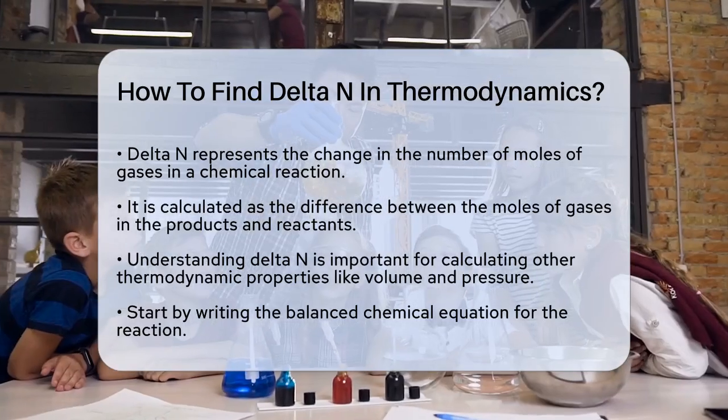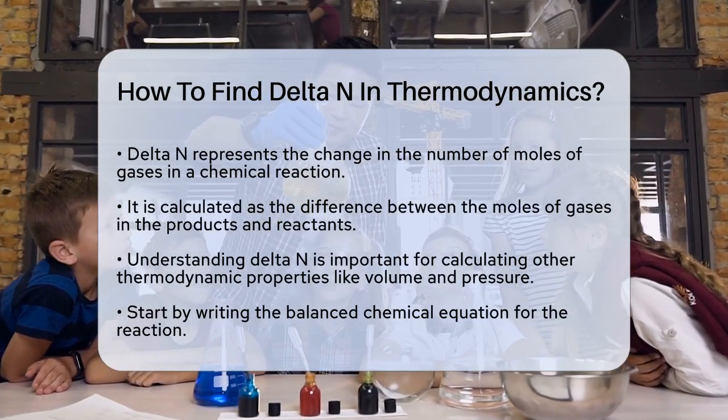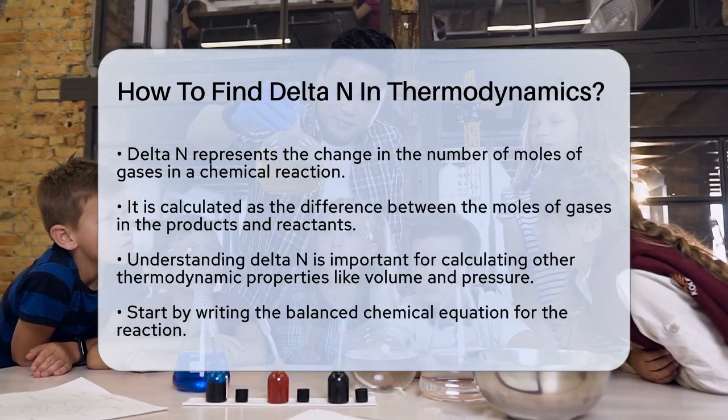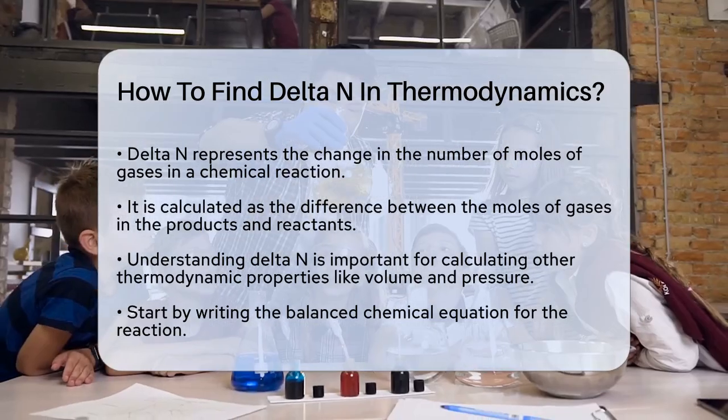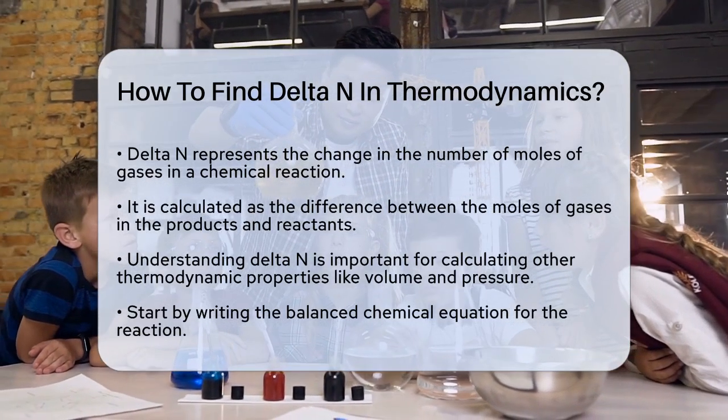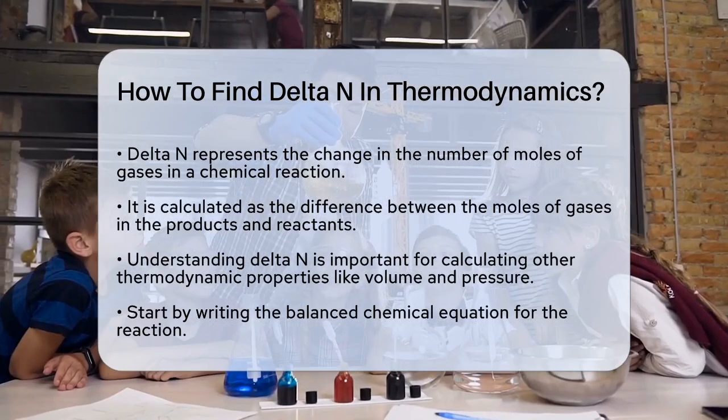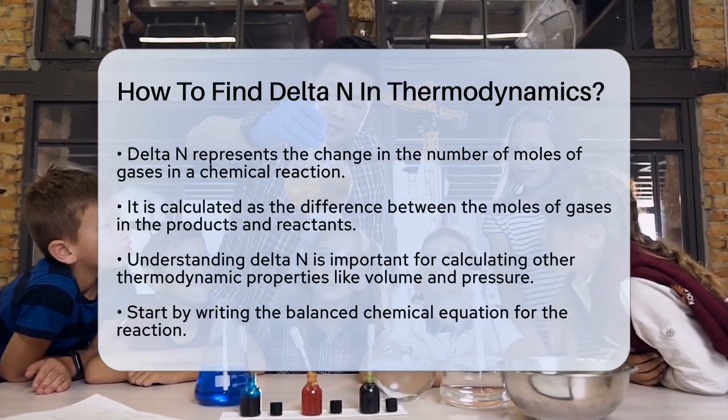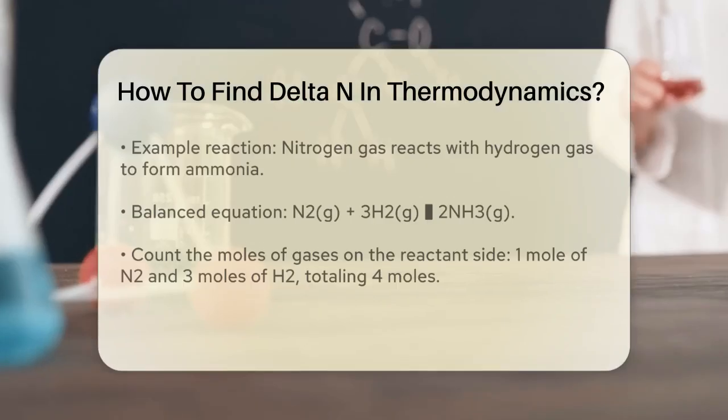First, you need to understand what delta N represents. It's the difference in the number of moles of gases between the products and the reactants in a chemical reaction. This is important because it helps you calculate other thermodynamic properties, like the change in volume or pressure, especially in reactions involving gases.